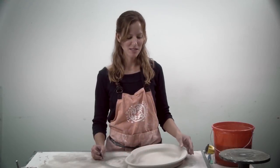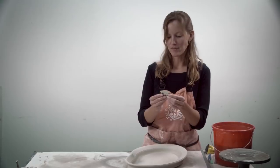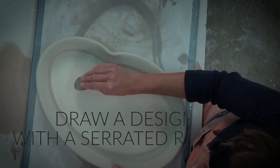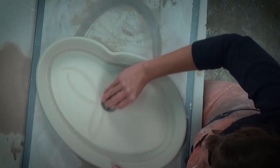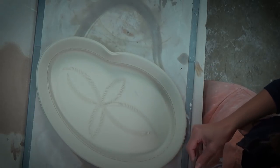We've come back to this piece leather hard and we'll just do a little decorating. I have a serrated rib cut in half that is easy to draw with. Let's do a little flower decoration. The glaze will look nice on that.